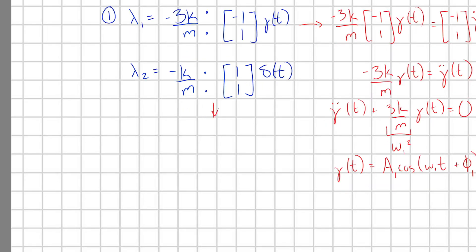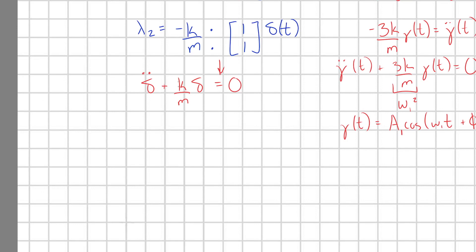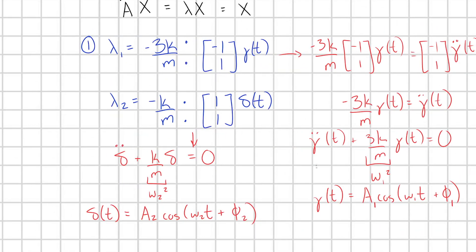For lambda two, plugging in similarly gives a very similar looking differential equation: delta double dot plus k over m times delta equals zero. Defining k over m as omega two squared, the solution is delta of t equals a2 cosine(omega2 t plus phi2). Now all we have to do is plug these functions back in for gamma and delta, and we're essentially done.